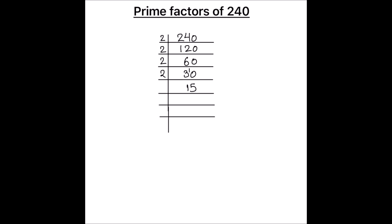15 is an odd number. It is fully divisible by the next prime number 3. 3 times 5 is 15. And 5 is a prime number which is only divisible by 5 itself. 5 times 1 is 5.